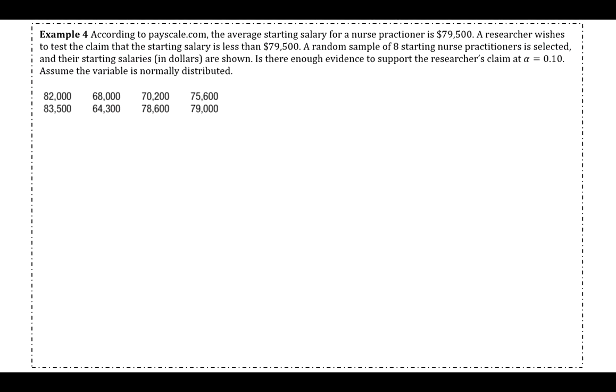Okay, we'll do one more example. So example four says, according to payscale.com, the average starting salary for a nurse practitioner is $79,500. A researcher wishes to test the claim that the starting salary is less than $79,500. A random sample of eight starting nurse practitioners are selected and their salaries are shown. Is there enough evidence to support the researcher's claim when alpha is 0.1? Assume the variable is normally distributed.